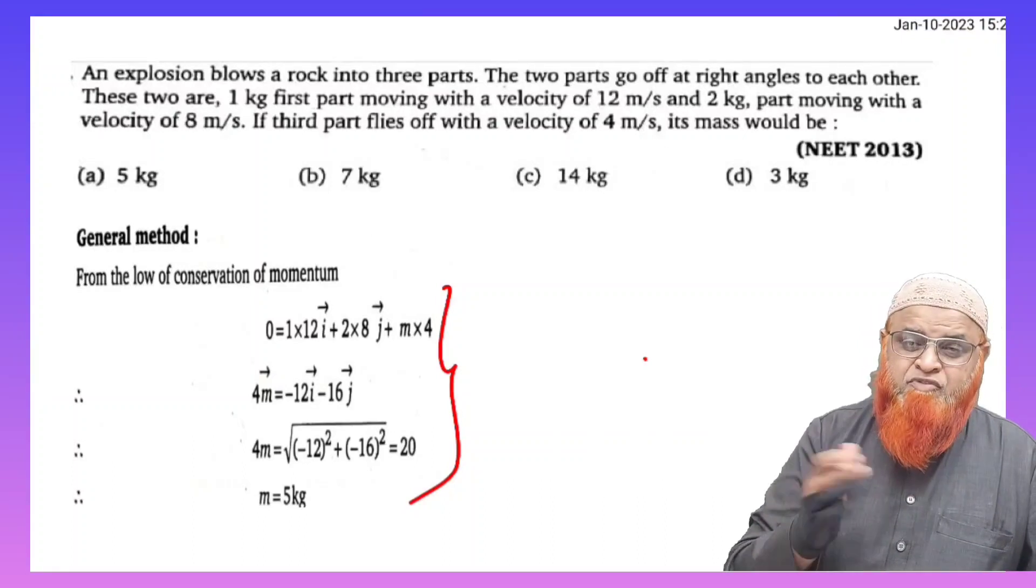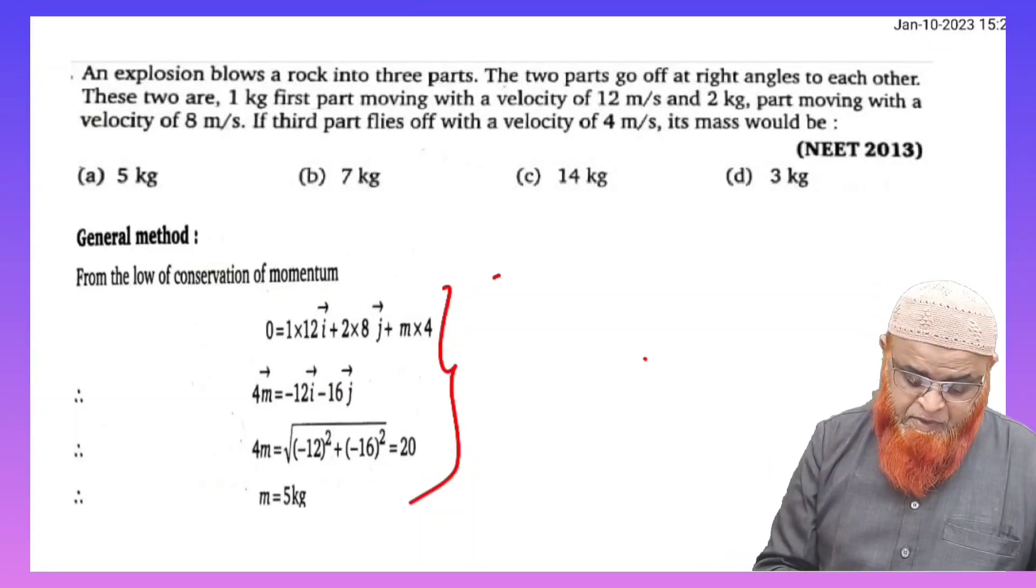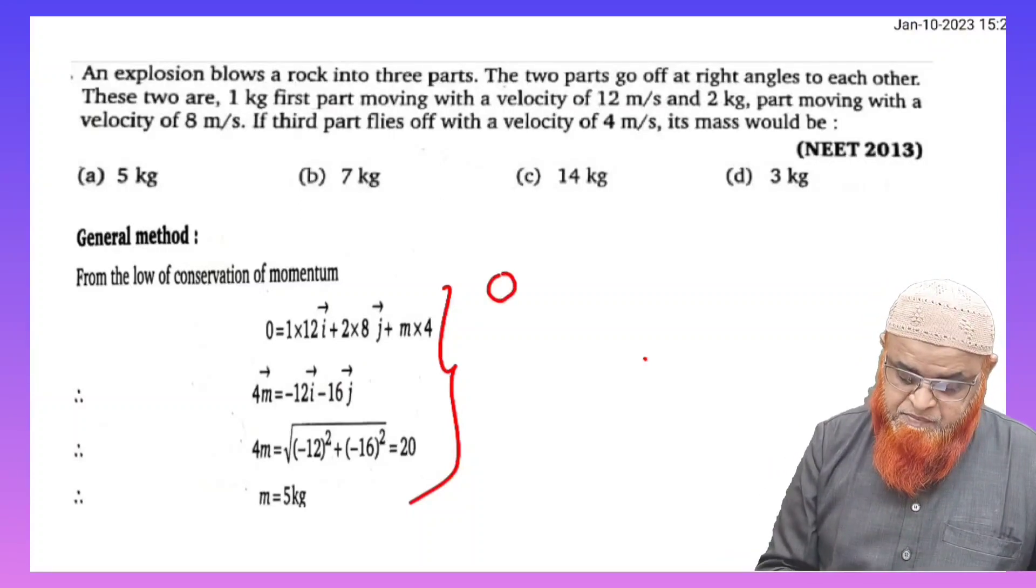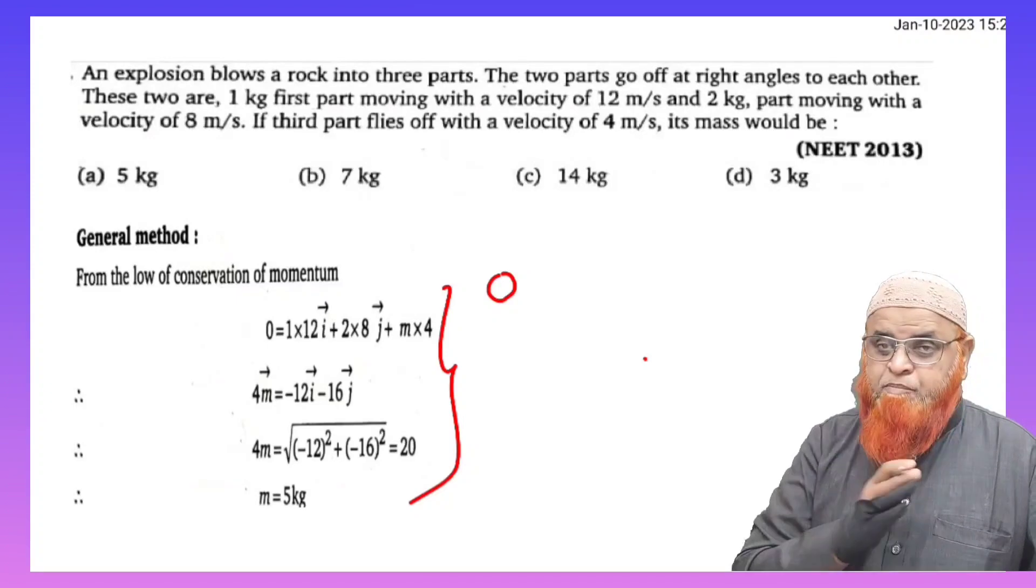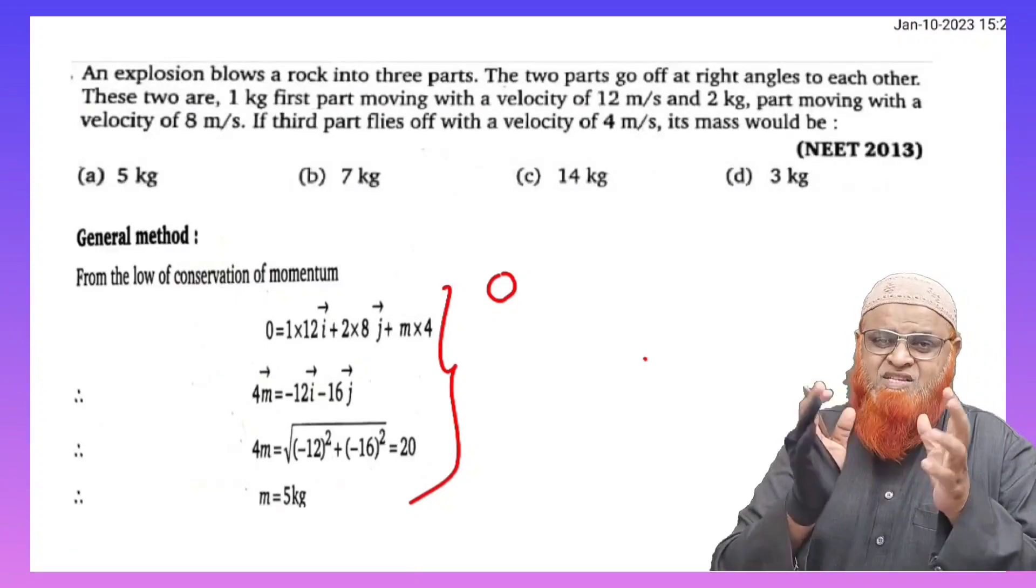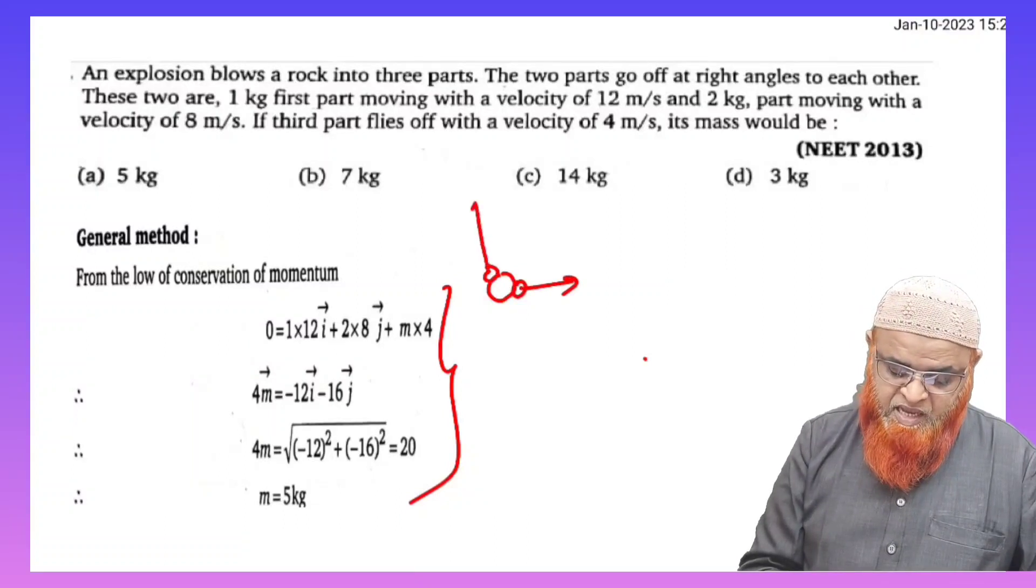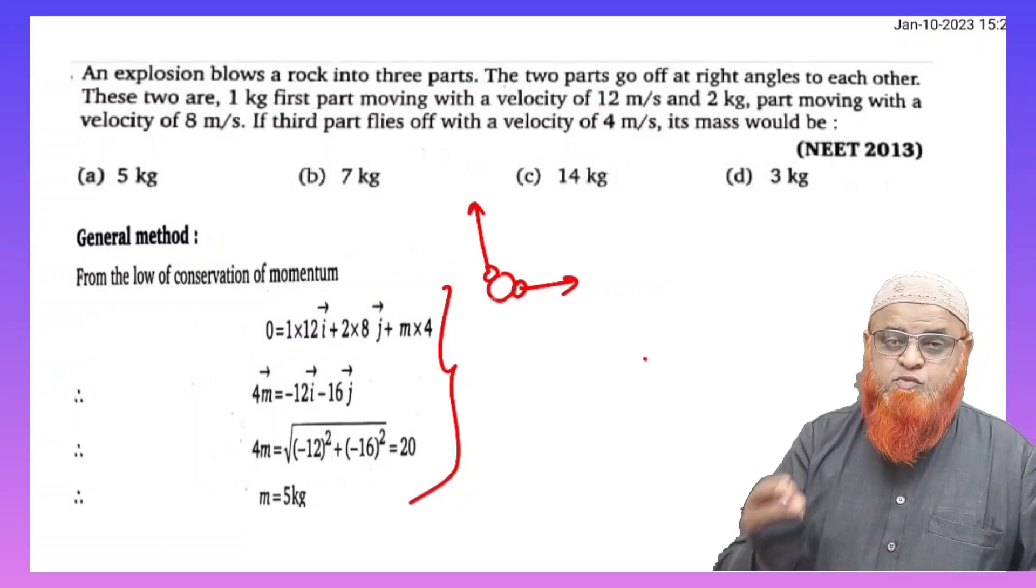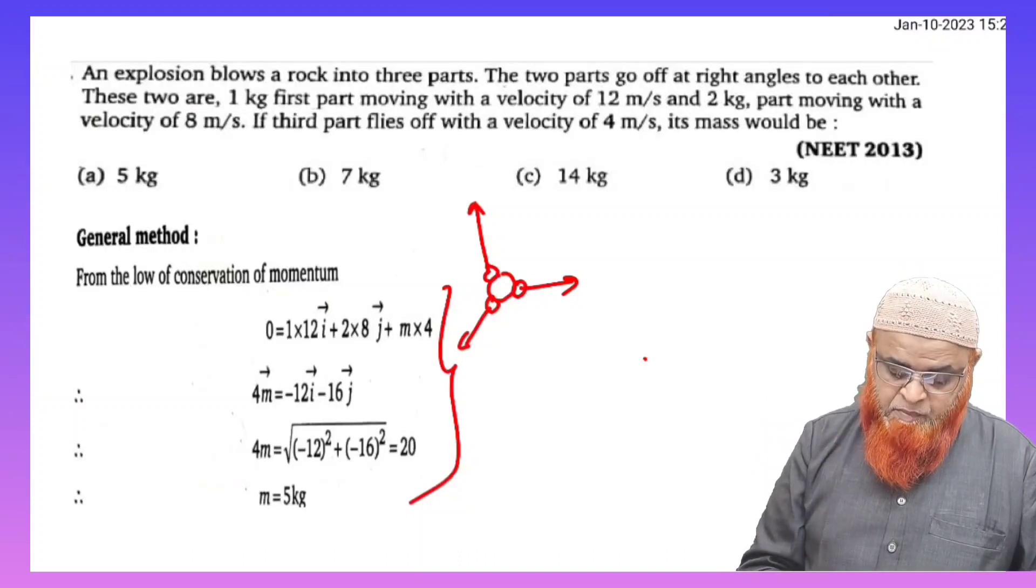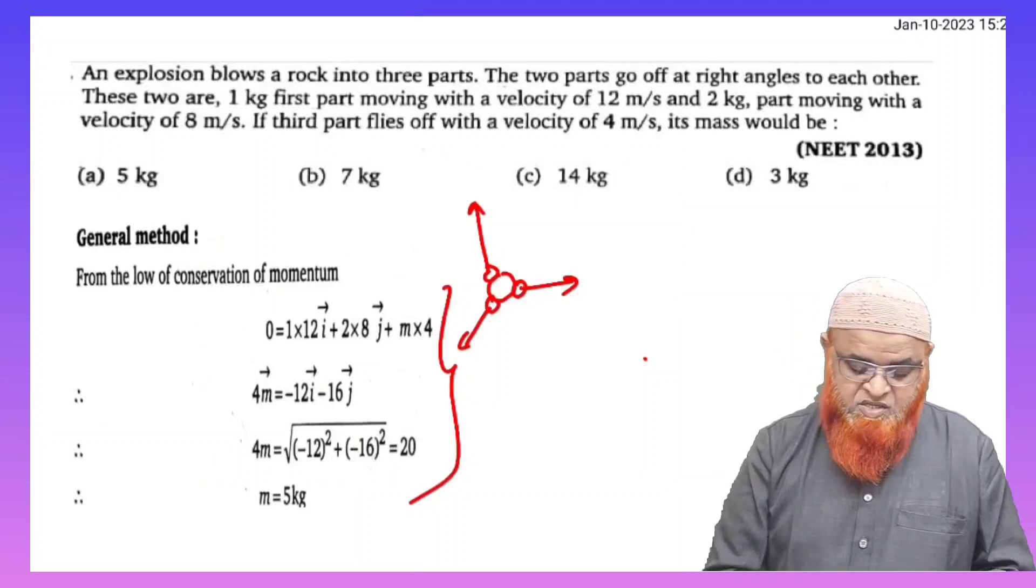Instead of going momentum before collision is equal to momentum after collision, here for example there are two bodies which are flying perpendicularly. Let us take one bomb or one block which has been blasted into three pieces, out of which if you observe one piece is moving in this direction, one piece is moving upward direction, and the third piece is moving in some other direction. So in such cases what are you going to do?